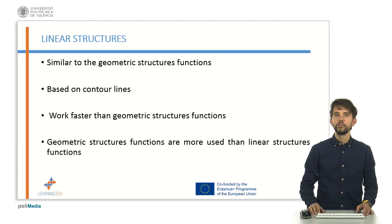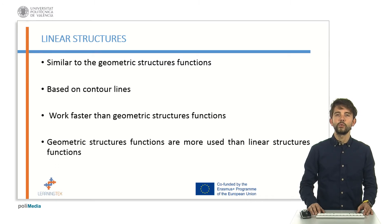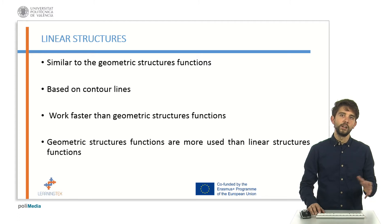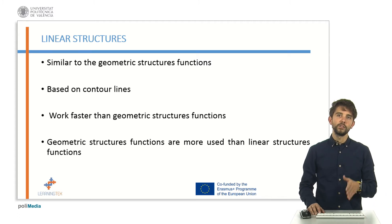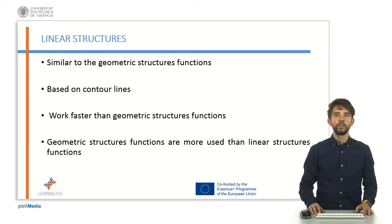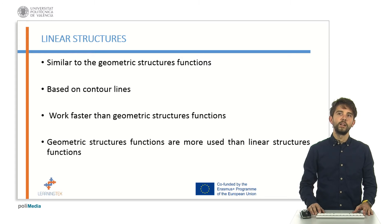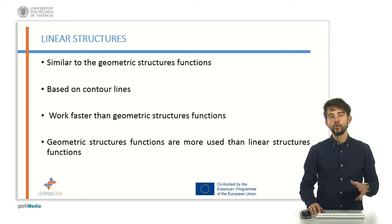Linear structures work similarly to geometrical structures, also based on contour lines. The main difference is that linear algorithms are optimized to work faster but cannot detect rotated items. These functions work faster than geometrical structure algorithms, but the latter is more commonly used in artificial vision.